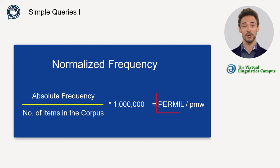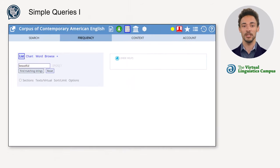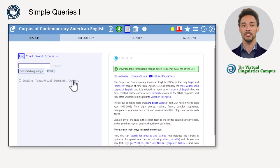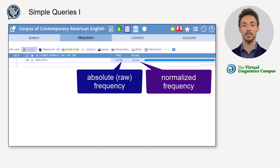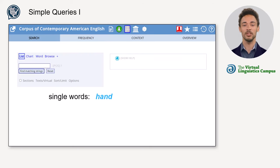This is abbreviated as 'per mil' or sometimes as 'pmw'. With the list function, the corpus usually shows us the raw frequency, but the display can be changed in the options from raw frequency to frequency per million. That way, both the raw and the normalized frequencies are displayed.